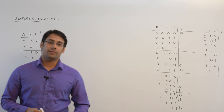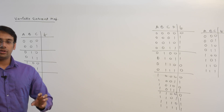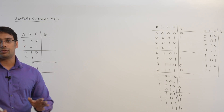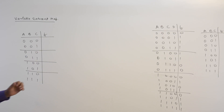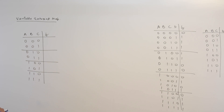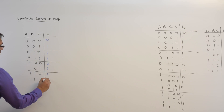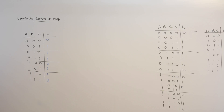Let us look at what is a Variable Entrant Map. A Variable Entrant Map is just a procedure to represent a bigger function with a smaller K-map, or you can say with a smaller number of variables. Assume we have a function of three variables and the values of the function are 0, 1, 1, 1, 0, 1, 1, 0.